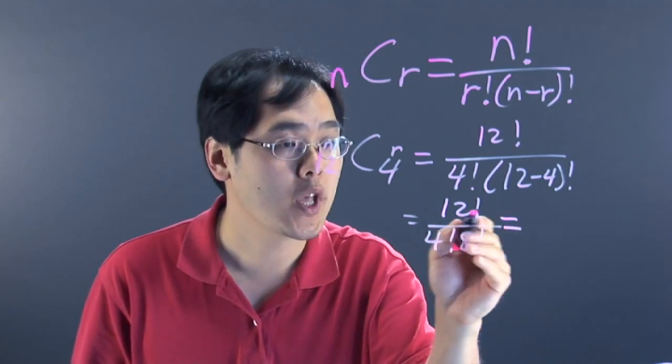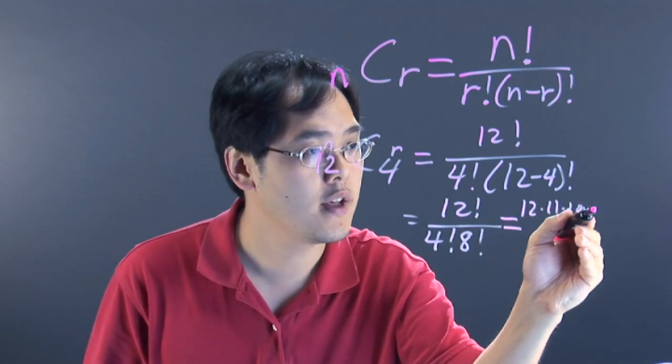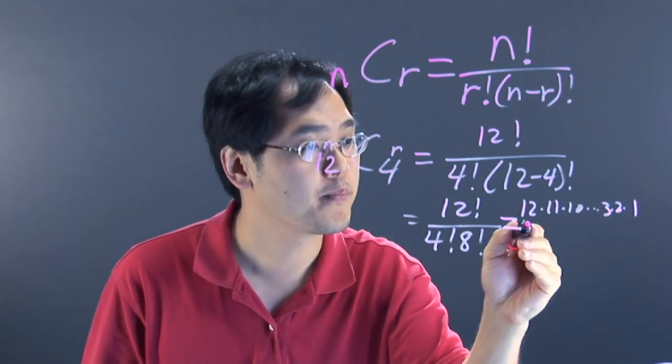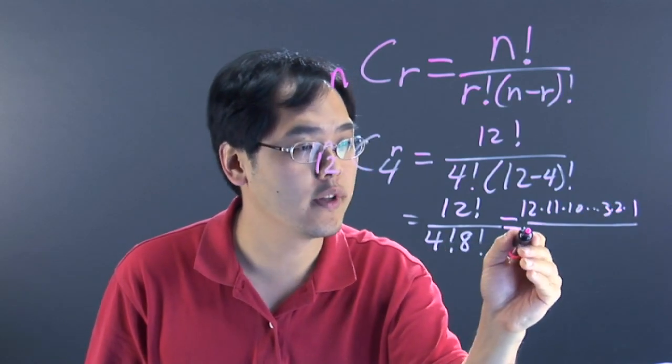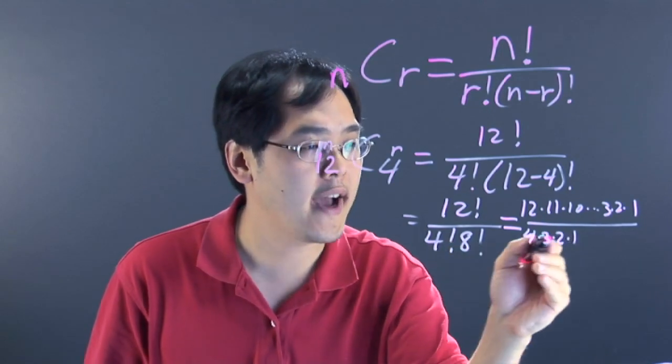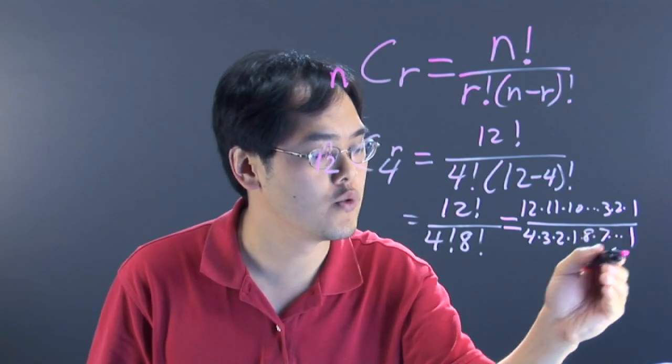Just a friendly reminder, 12 factorial is 12 times 11 times 10 all the way down to 3, 2, 1. 4 factorial is 4 times 3 times 2 times 1. 8 factorial is 8 times 7 all the way down to 1.